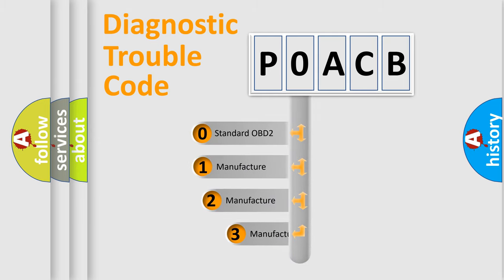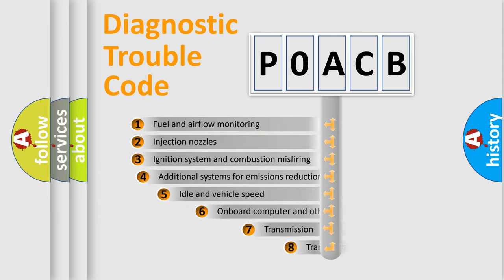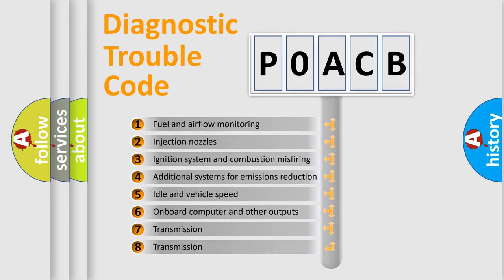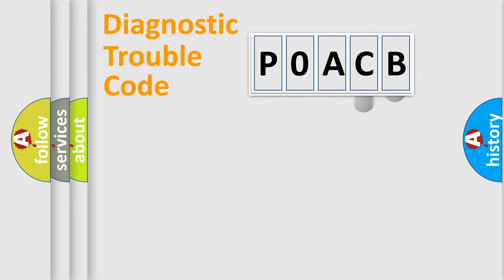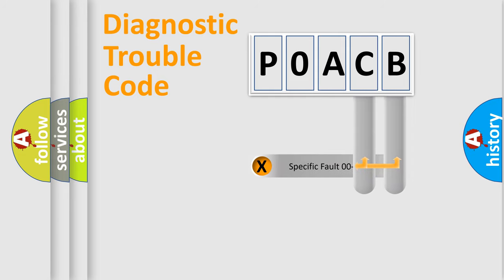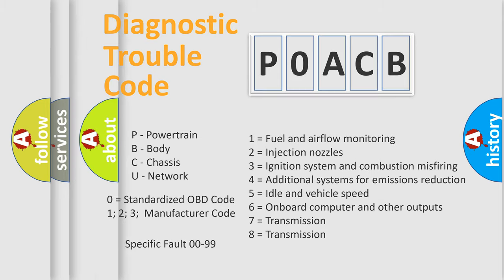If the second character is expressed as zero, it is a standardized error. In the case of numbers 1, 2, or 3, it is a more specific expression of a car-specific error. The third character specifies a subset of errors. This distribution is valid only for the standardized DTC code, where only the last two characters define the specific fault of the group. Such a division is valid only if the second character code is expressed by the number zero.